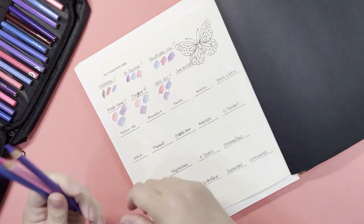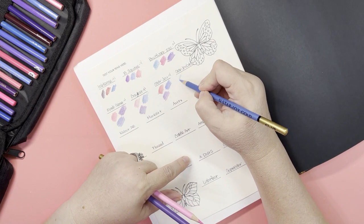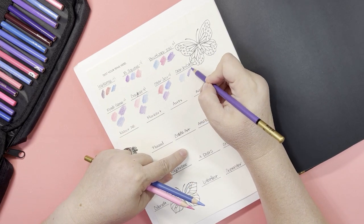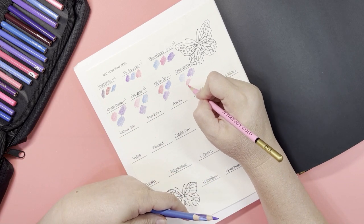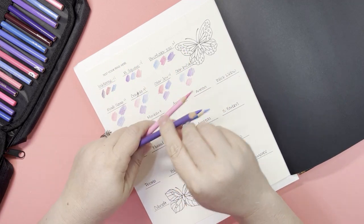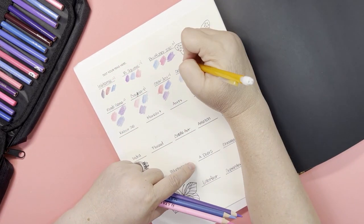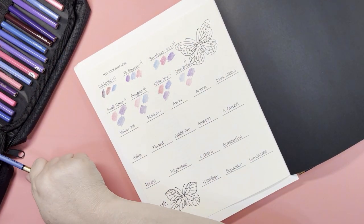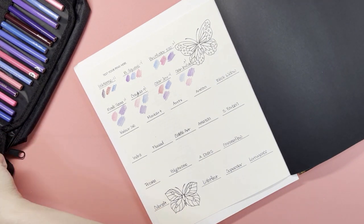Next ones we have are the Staedtler joy gold. People say these are supposed to be comparable to the Polychromos, I don't know if I agree with that. They're supposed to be a layering pencil. They're scratchy. I feel like they're scratchy, yeah I'm gonna say no.